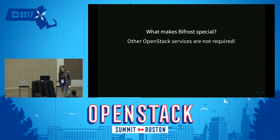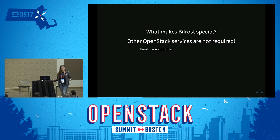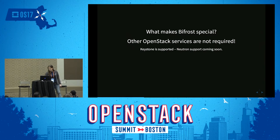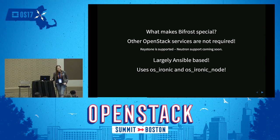What makes Bifrost special? Other services are not required. You don't need Nova. You don't need Glance. You could probably bolt them on yourselves, but you don't need them to actually use the playbooks to deploy machines. Keystone is supported, not installed by default, but it is there and you can use it. We're working on Neutron support — that's a whole more bit of work than I'd ever thought. And Bifrost is largely based on Ansible and uses the os_ironic and os_ironic_node modules in Ansible to deploy machines in an environment.